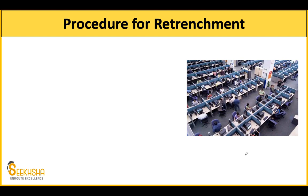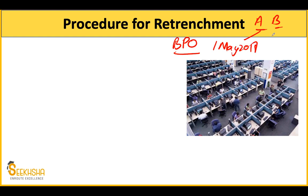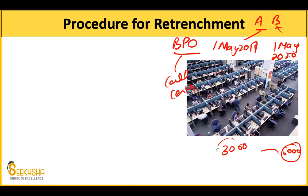Next is the procedure for retrenchment. For example, there is a BPO with two employees: A joined 1 May 2018 and B joined 1 May 2020. The situation is that the BPO organization — a call center — has BPO professionals all in almost the same category of employees. Now there are 5,000 people and because revenues are reduced or they are not financially stable, they decide they want to reduce employees.